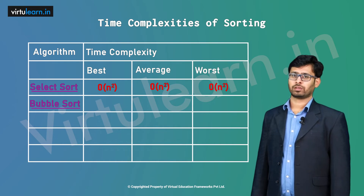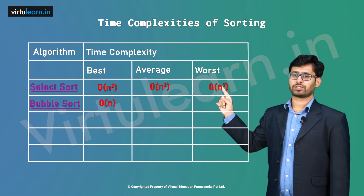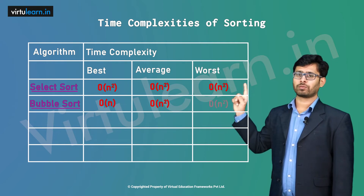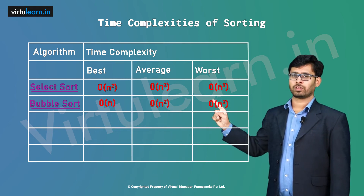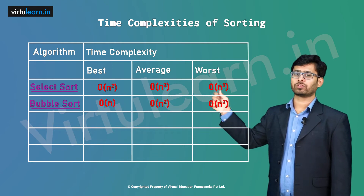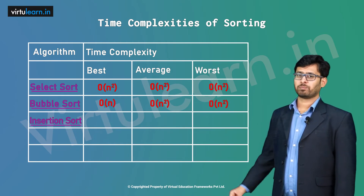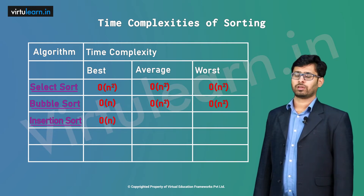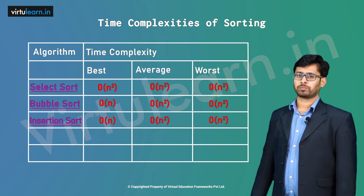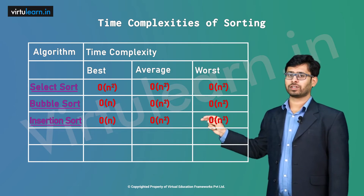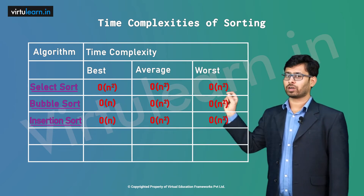Next, bubble sort. The best case is O(n), the average case is O(n²), and the worst case is O(n²). For insertion sort, the best case is also O(n), the average case is O(n²), and the worst case is O(n²). If you watch closely, the time complexities for bubble sort and insertion sort are the same.